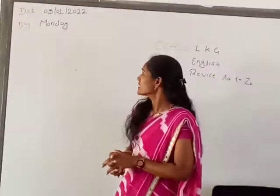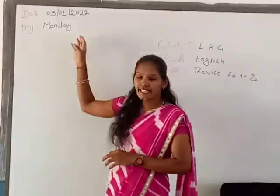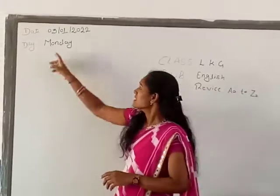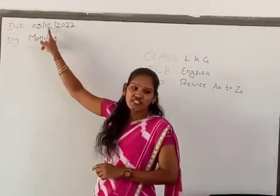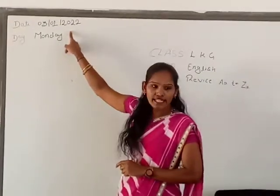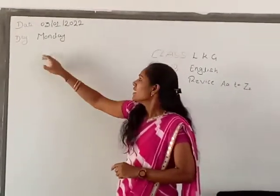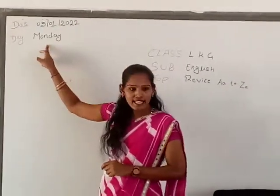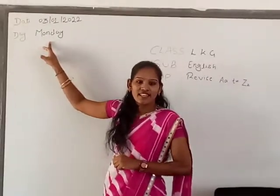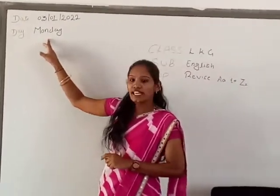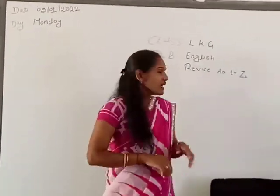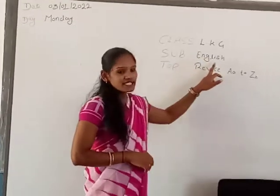And today is — what is the date? Date is 3. January 2022. And the date is? What day today? Monday. Today is Monday.